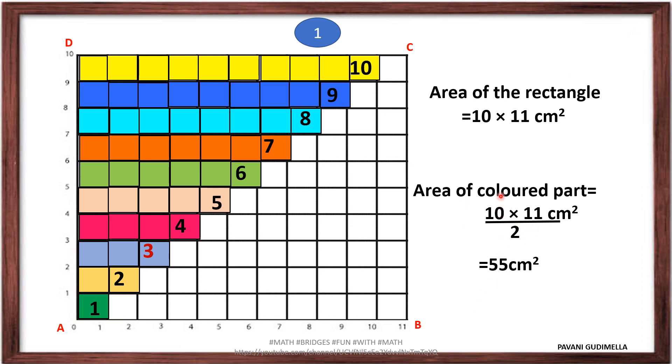You can cancel: 2 ones are 2, 2 fives are 10, so 4, 11s are 55. 55 cm square is the area of only the colored part here.